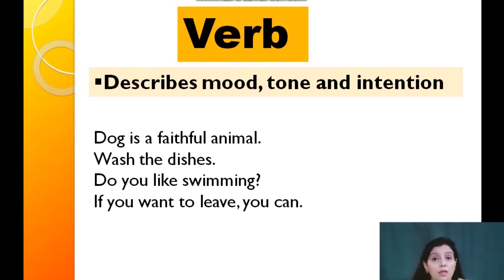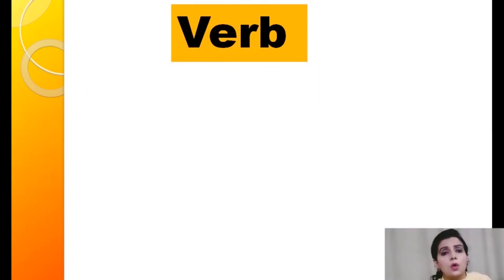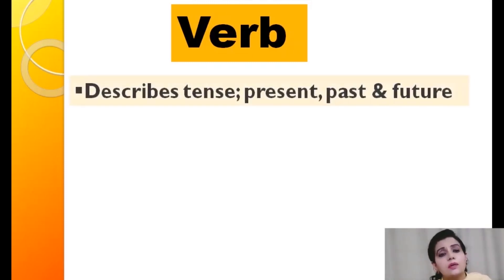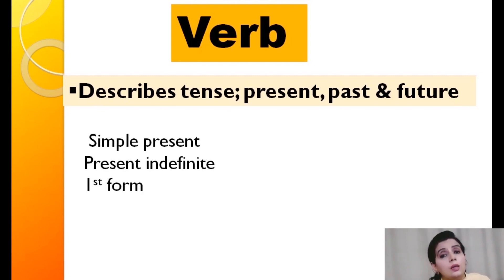The verbs tell us about mood and intention of the subject — whether it is a question or an instruction. We find all these details through verb. In our next lesson we will learn about the different forms of verbs. Forms of verbs tell us about the tense — present, past, and future. Generally, we know there are three forms of verbs: first form, second form, and third form.